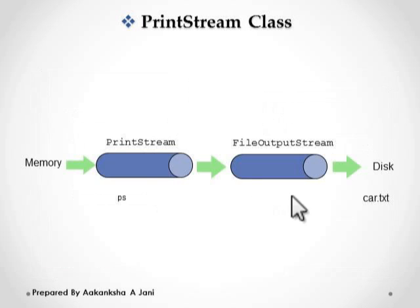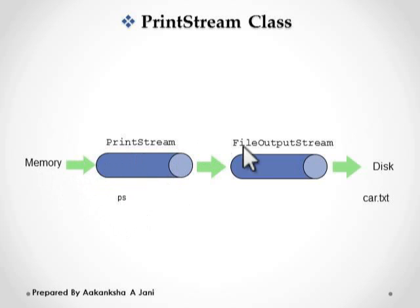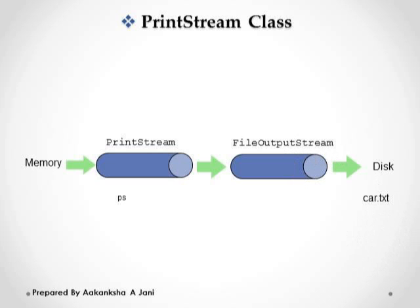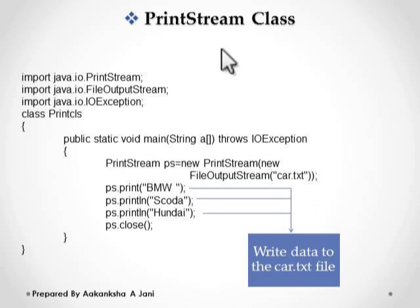Let's see one example of PrintStream class. This is the memory; this is ps, the object of PrintStream class. This is a FileOutputStream. Using FileOutputStream, the PrintStream object writes data to the card.txt file. For this example, first we import PrintStream class, then FileOutputStream class, then IOException.